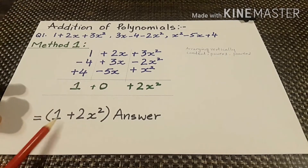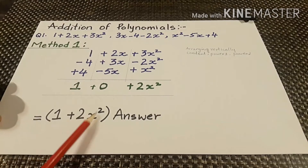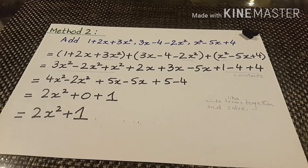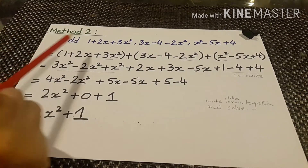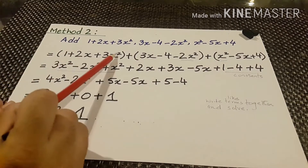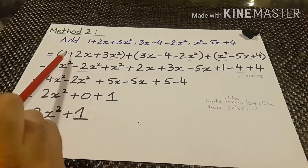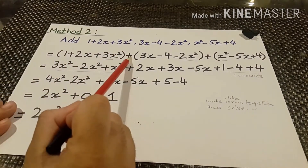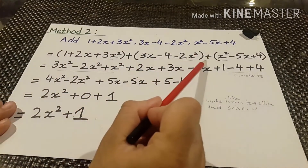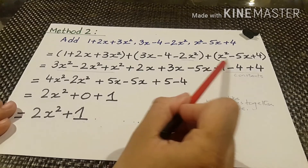By arranging the values we get our answer: 1 plus 2x squared. Now the second method of adding polynomials is also very simple. We will write the values in brackets: the first polynomial, plus the second polynomial, plus the third.